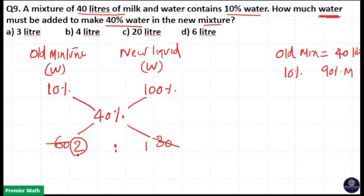Here 2 parts is equal to 40 liters because it is old mixture. Never add 2 plus 1 because this is new liquid and this is old mixture. So old mixture part is equal to 40 liters.